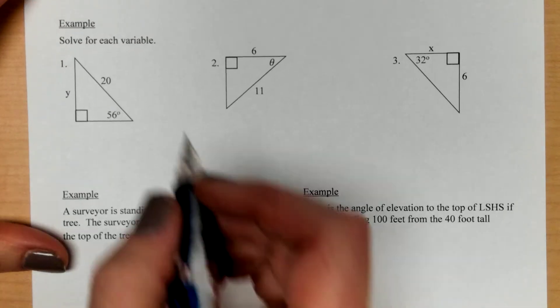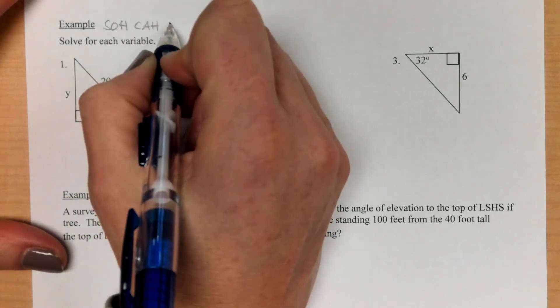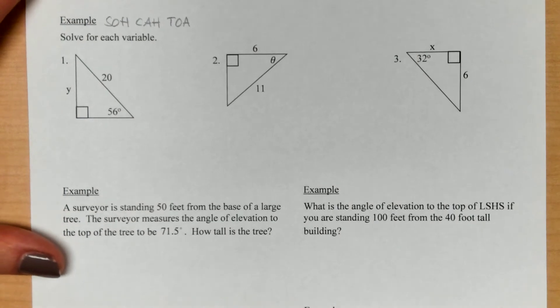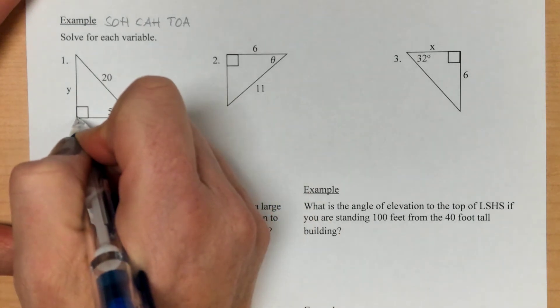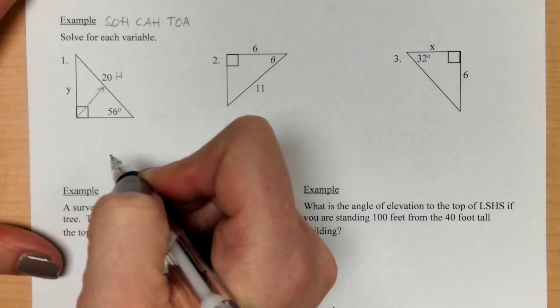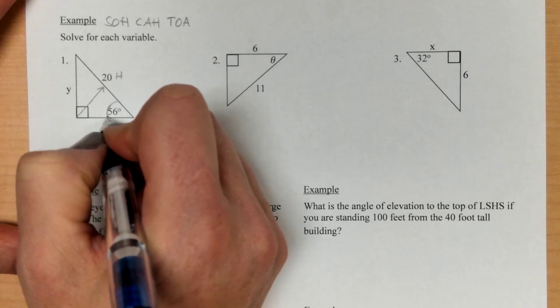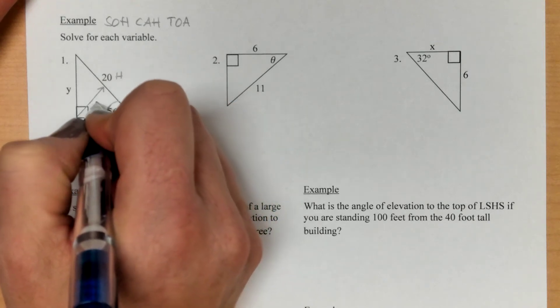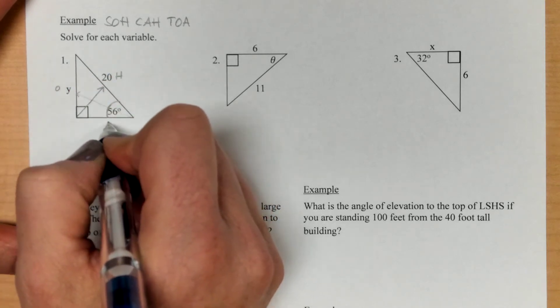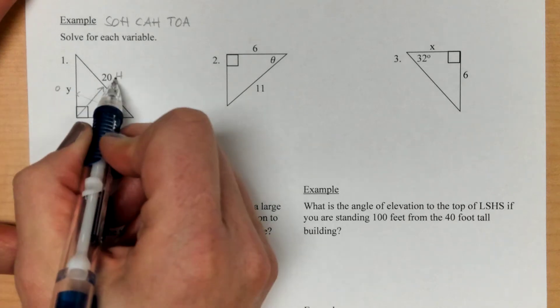So just doing some quick SOHCAHTOA problems. Remembering that sine is opposite over hypotenuse, cosine is adjacent over hypotenuse, and tangent is opposite over adjacent. So I always start off by identifying the hypotenuse. Draw through the 90 degree angle and you'll point to the hypotenuse every time. And then from the angle you're working with, that's where you want to identify opposite and adjacent. So from 56, the y side is the opposite side. And this one that has nothing, this would be the adjacent side.